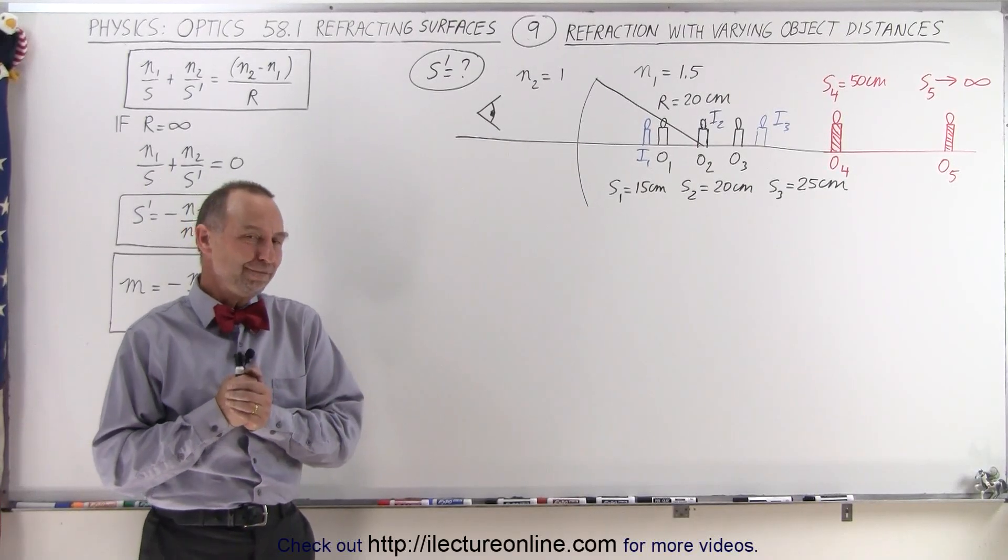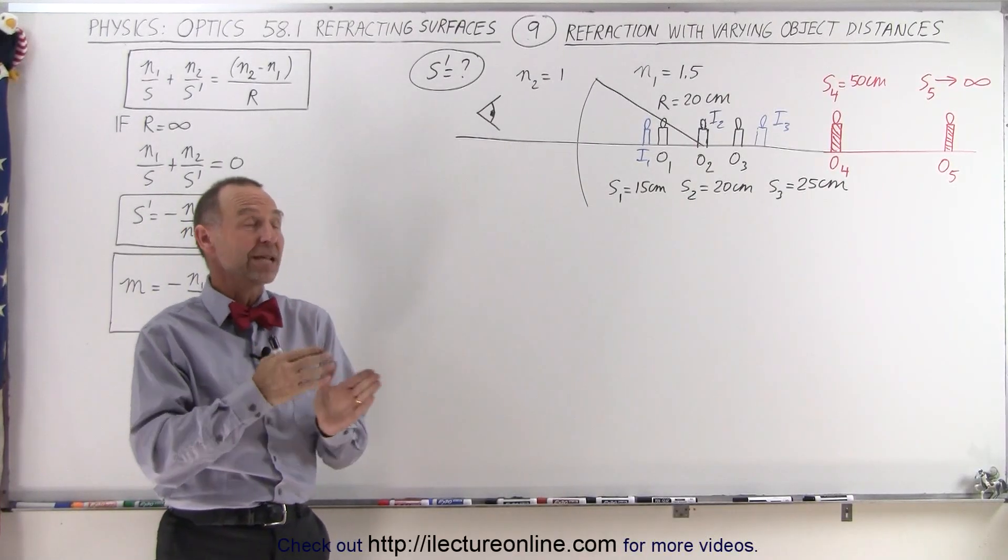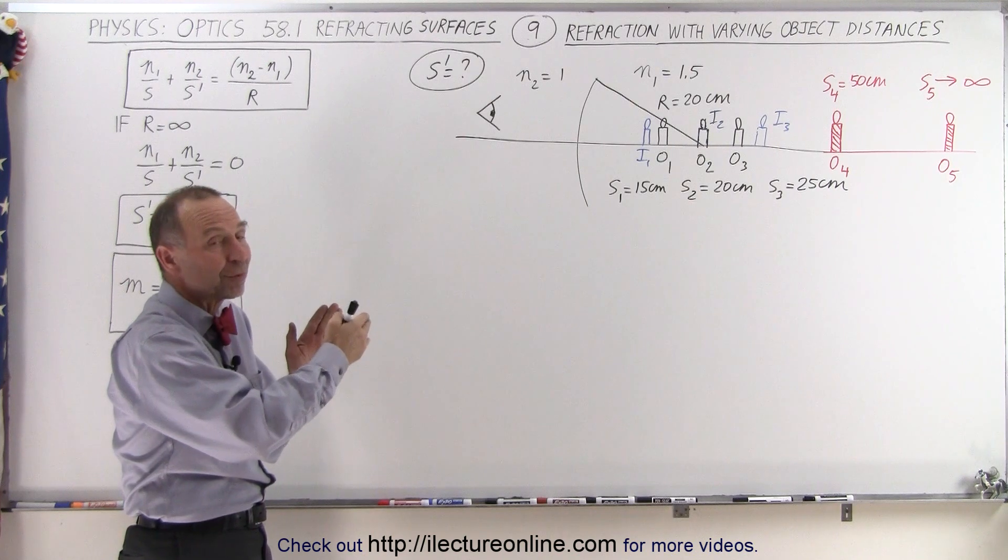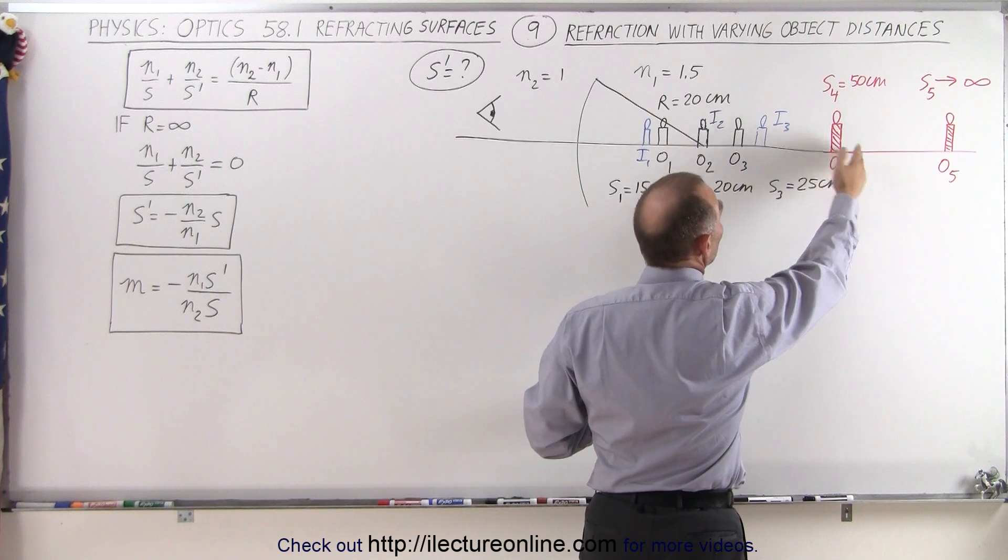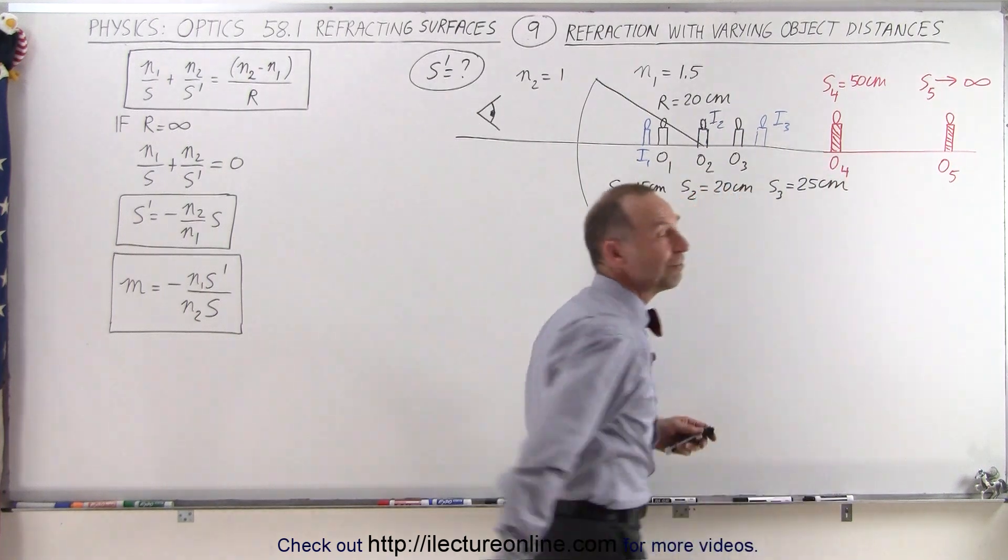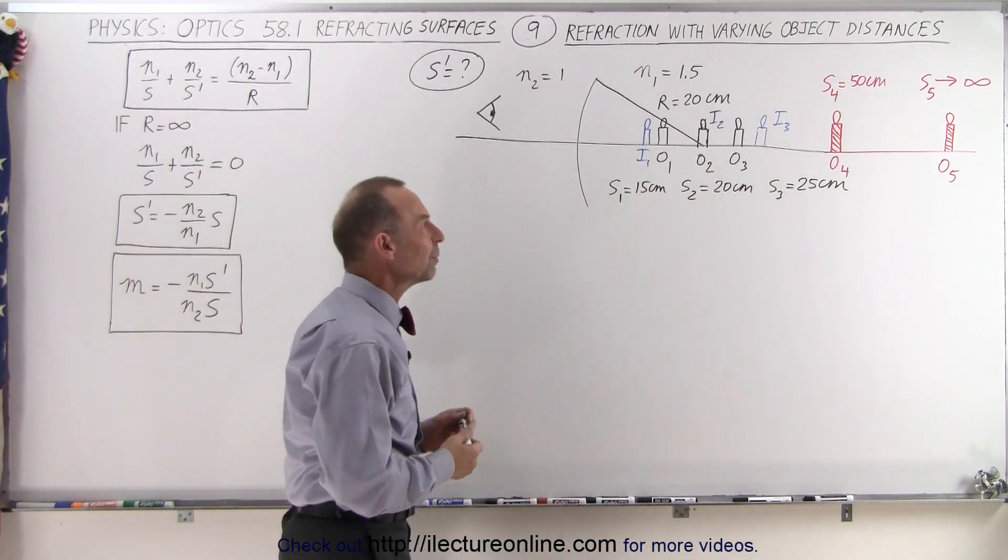Welcome to our lecture online. Now let's see what happens to the image as we continue to move the object further away from the boundary. First we'll place it 50 centimeters away and then we'll place it out towards infinity. Where will the image be when we do that?